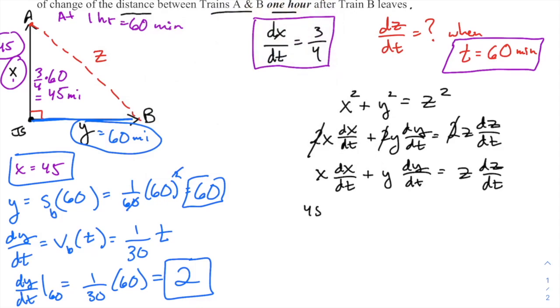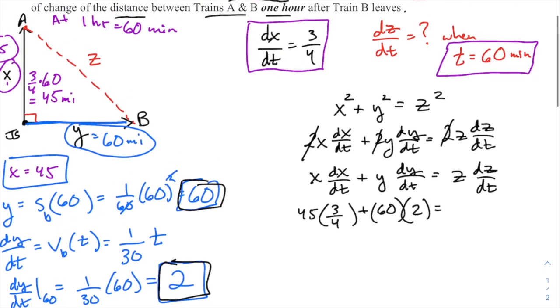So now I've got everything I need. It just took a while to get it all and sort it all out. I've got x, I've got z, I got y, I got dx. All right, here we go. Let's plug in. So x, as we said, at this moment is 45. dx/dt at this moment is three-fourths. Y at this moment, one hour after or 60 minutes after, y was 60. dy/dt, that's that velocity I found, that's 2. Equals z, that was that 75, that hypotenuse, times dz/dt—that is what I'm trying to solve for.